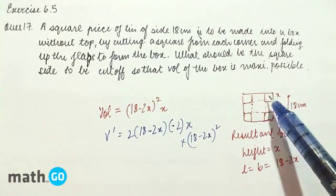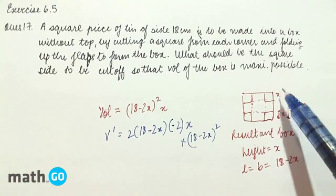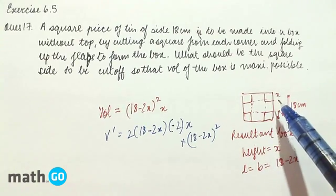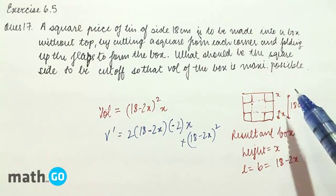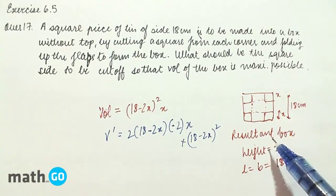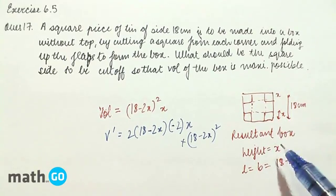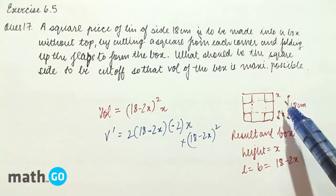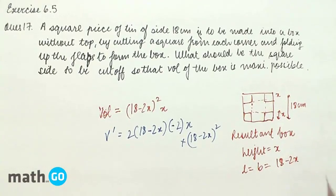Let us consider this as a square piece of tin with side 18 cm. Suppose the square that is cut is x cm. Now we have to find what should be the square side - we have to actually find x to be cut off so that volume is maximum possible.